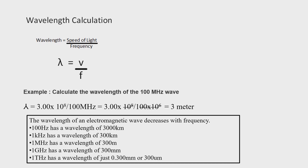So 100 × 10⁶ Hz is 100 MHz. Now, λ = (3 × 10⁸) / (100 × 10⁶). Since 100 × 10⁶ = 10⁸, the 10⁸ in the numerator cancels with 10⁸ in the denominator, giving λ ≈ 3 meters. The wavelength of a 100 MHz wave is 3 meters. This is how we calculate the wavelength for a given frequency.